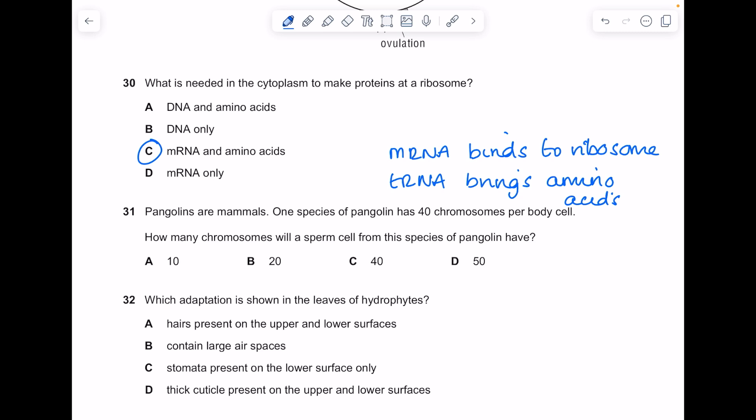Pangolins are mammals. One species of pangolins has 40 chromosomes per body cell. How many chromosomes will the sperm cell have? If the body cell diploid number is 40, sperm cells are haploid which means they'll contain half the number. The answer here is 20.